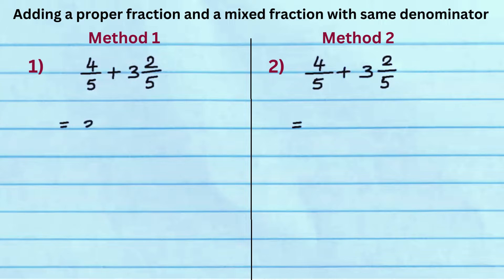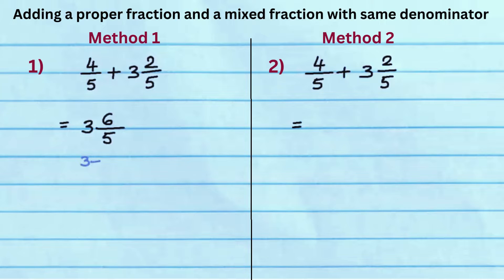In method 1, write the whole number 3, common denominator 5, and add the numerators 4 and 2 to get 6. Since 6 by 5 is an improper fraction, simplify it to get 1 and 1 fifths. Add 1 and 1 fifths, 2, and 3 to get the answer 4 and 1 fifths.